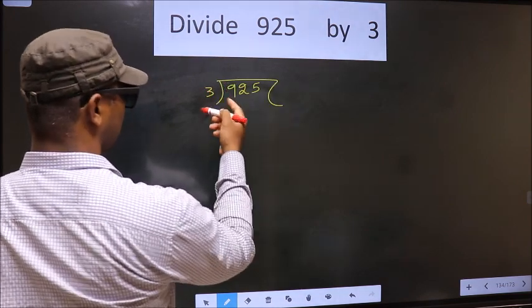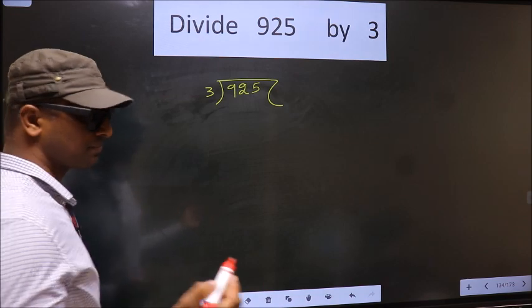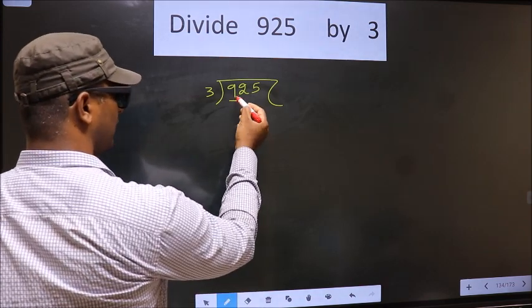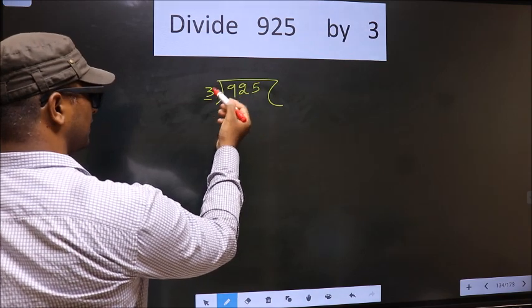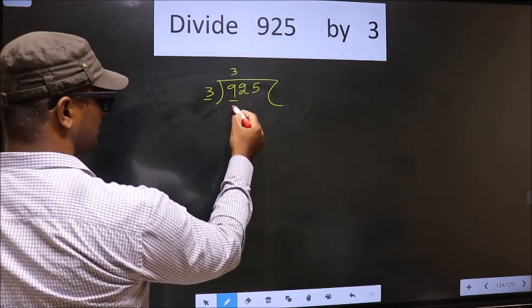Here we have 9, here 3. When do we get 9 in the 3 table? 3 times 3 is 9.